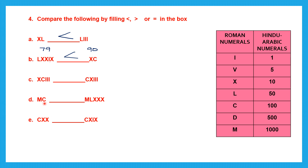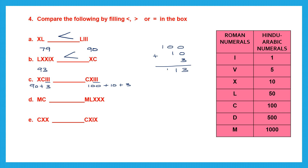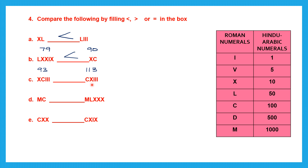Next: XCIII is 100 minus 10 plus 3 equals 93, and CXIII is 100 plus 10 plus 3 equals 113. So 93 is less than 113.